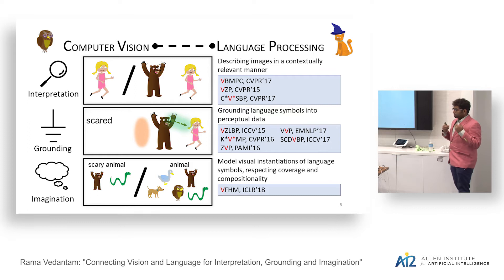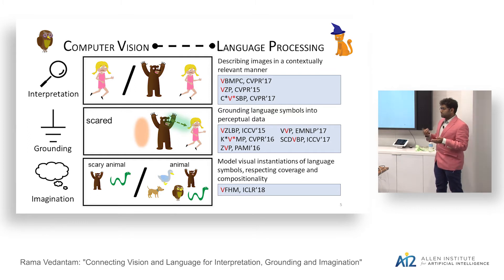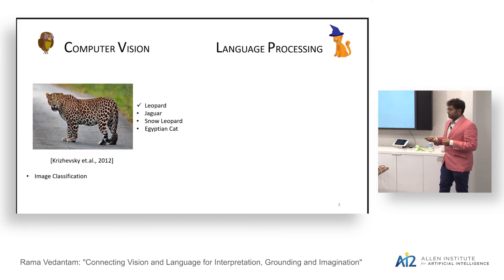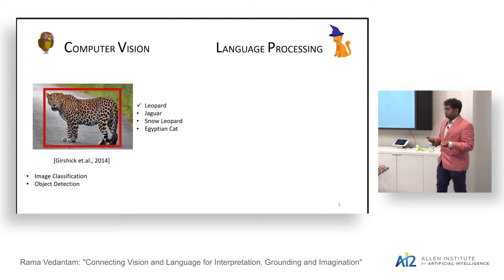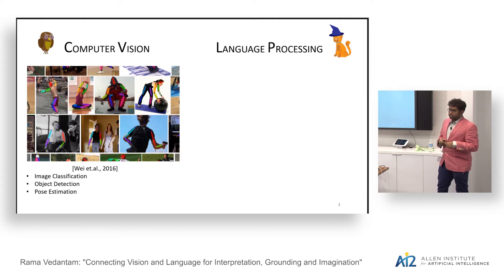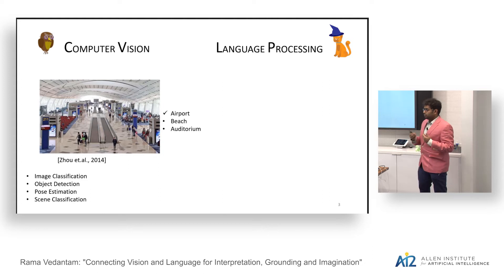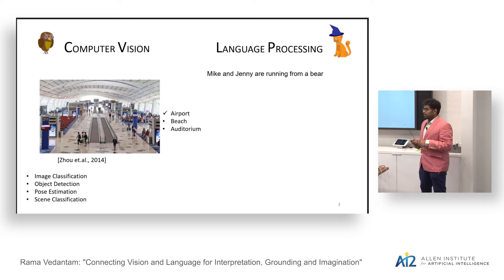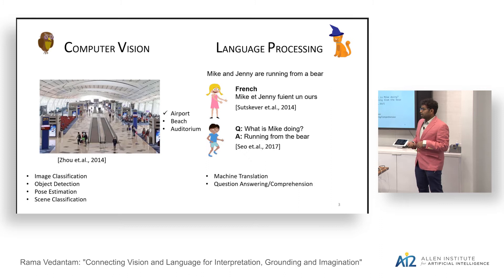The benefits of learning such rich representations have been seen in computer vision and natural language processing. In vision, given an image, we are able to label it — for instance, with a cheetah — put a box around an object of interest, estimate the poses of humans, and classify what kind of scene we are looking at. On the text side, we are able to read a sentence and translate it to French, answer questions, summarize sentences, and so on.